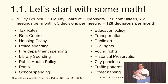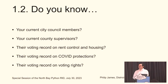As part of the framing, item 1.2: do you know your current city council members? Do you know your current county supervisors? Do you know their voting records on rent control and housing? Do you know their voting record on COVID protections? Do you know their voting record on voting rights? Item 1.3: would you like to?